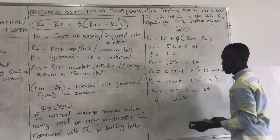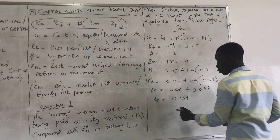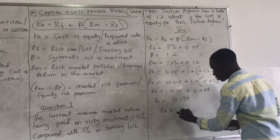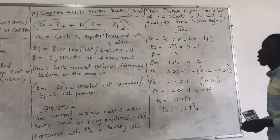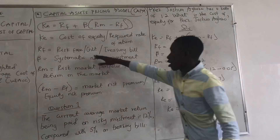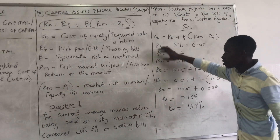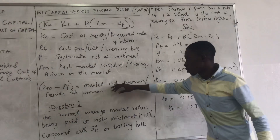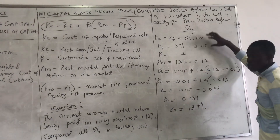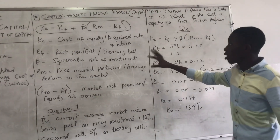Remember: for cost of equity and cost of debt, after getting your final answer, convert it to a percentage. So K = 0.134 × 100 = 13.4%. That's the Capital Asset Pricing Model worked out. Note: it's not always that you'll be given RF and RM separately — sometimes the question states the market risk premium or equity risk premium directly, and you just substitute that figure straight into the bracket.